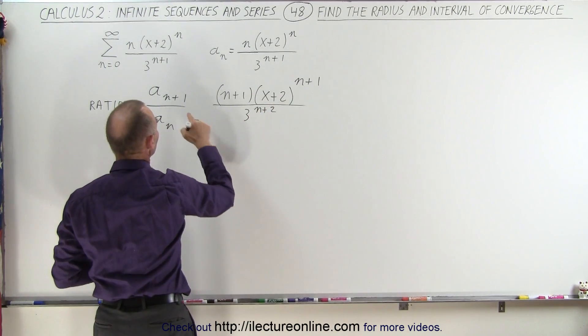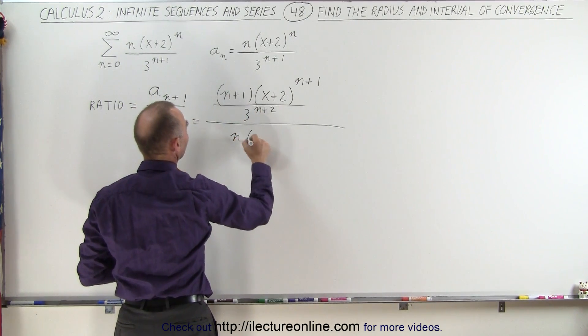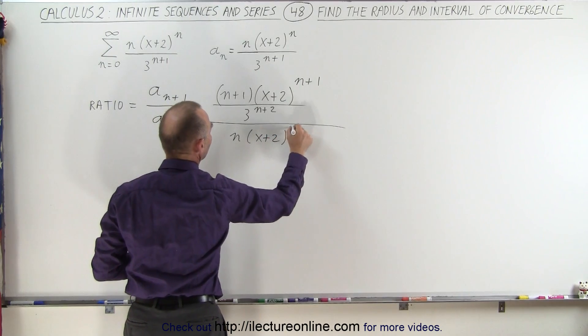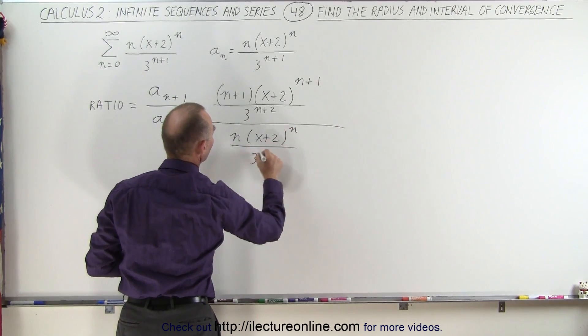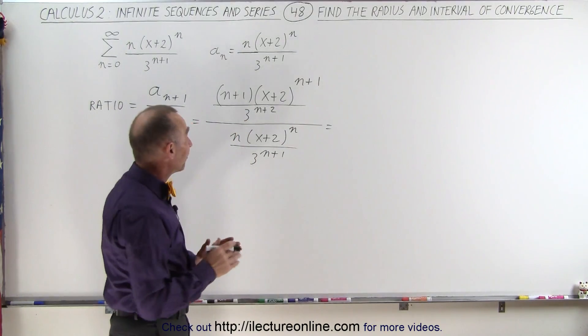Let me put the equal sign over here, and so we divide the whole thing by the previous term, which is n times (x+2) to the n power divided by 3 to the (n+1) power. So this now can be simplified as follows.